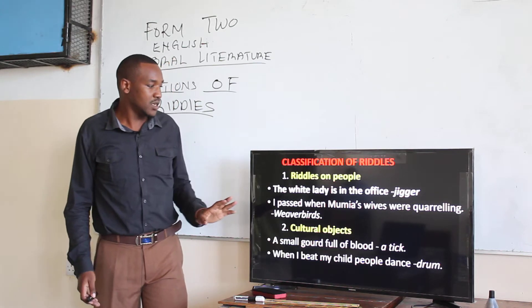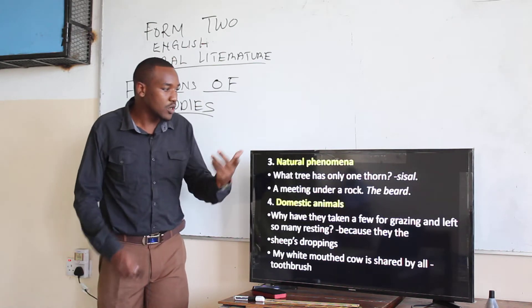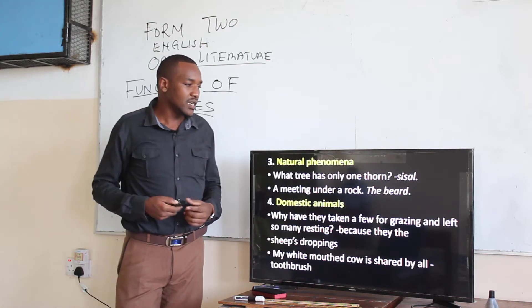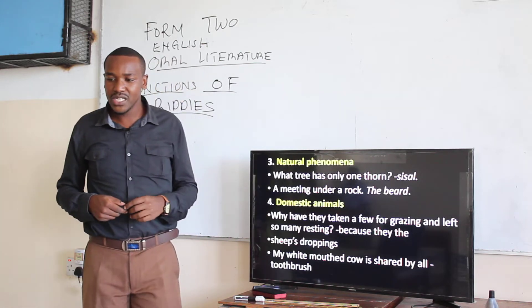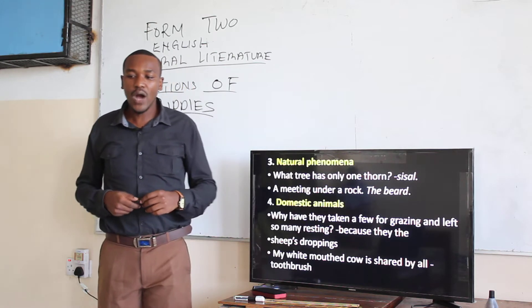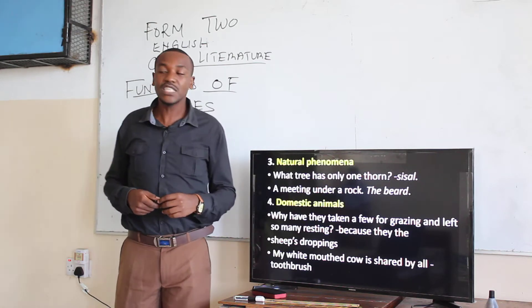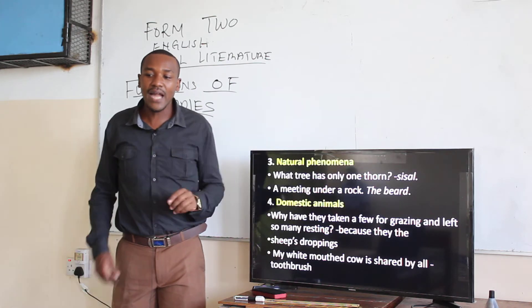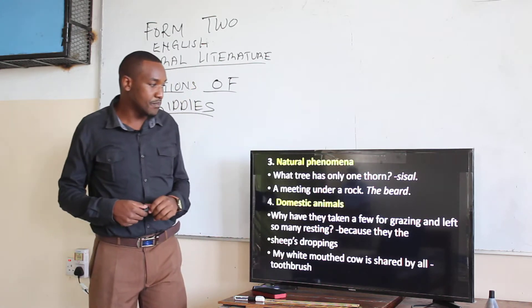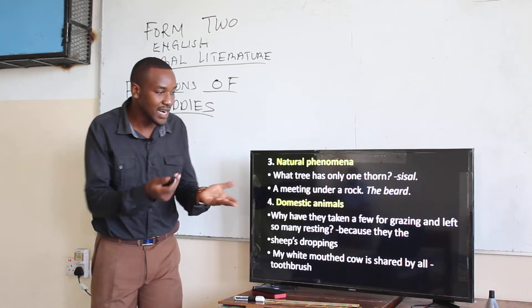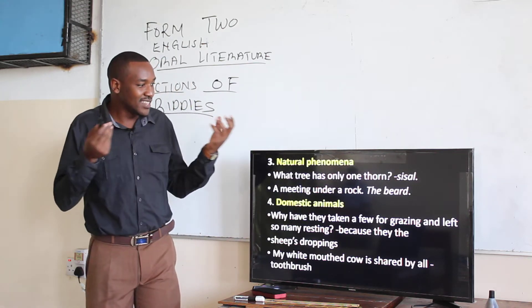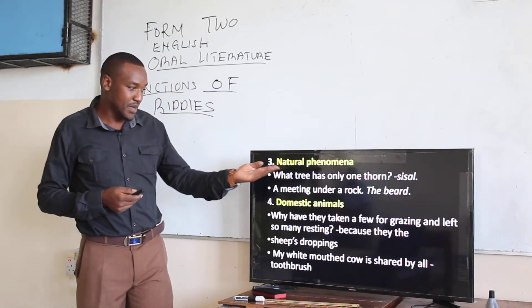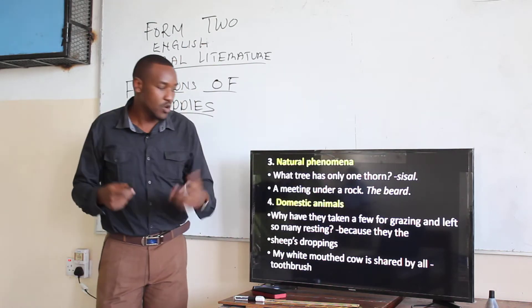Another classification of riddles is natural phenomena. For example: 'What tree has only one thorn?' — the response is sisal. And then: 'A meeting under a rock' — we have the beard. The head is the rock, and under it the beard is the meeting. So those are riddles about natural phenomena.